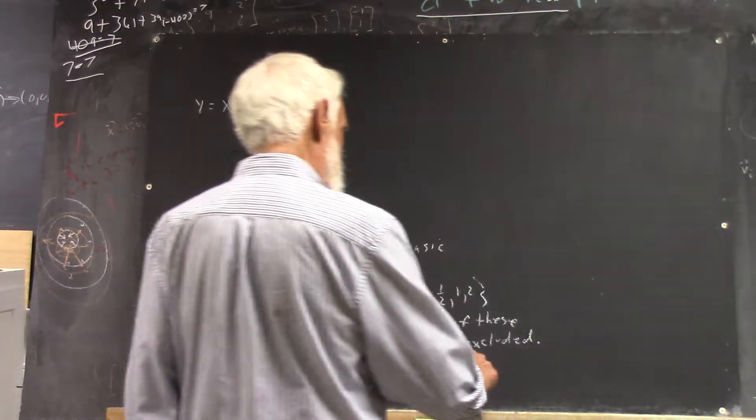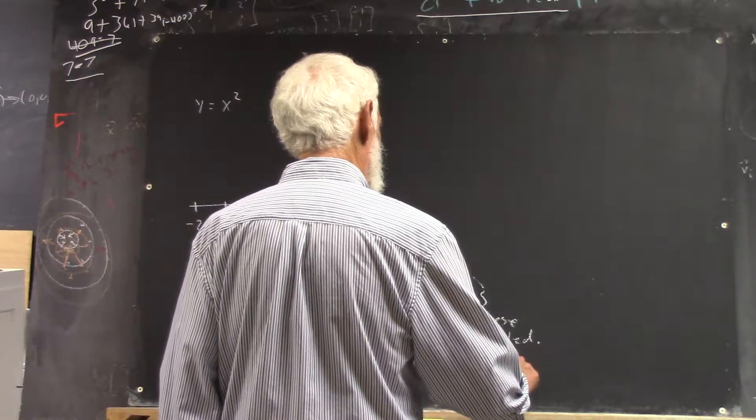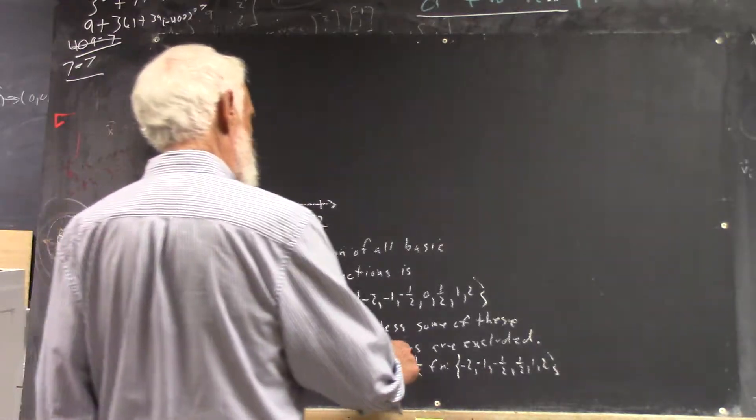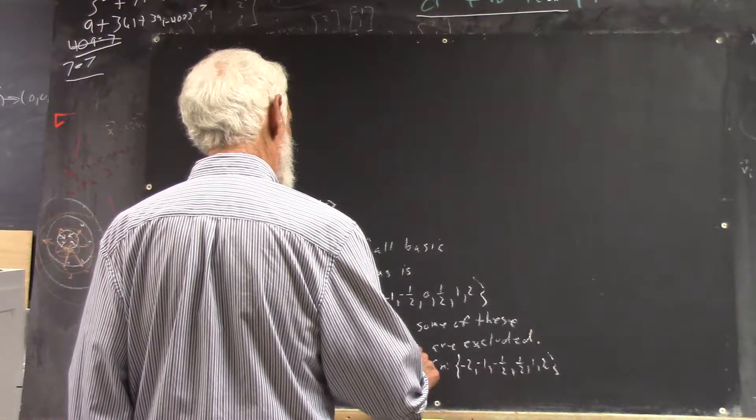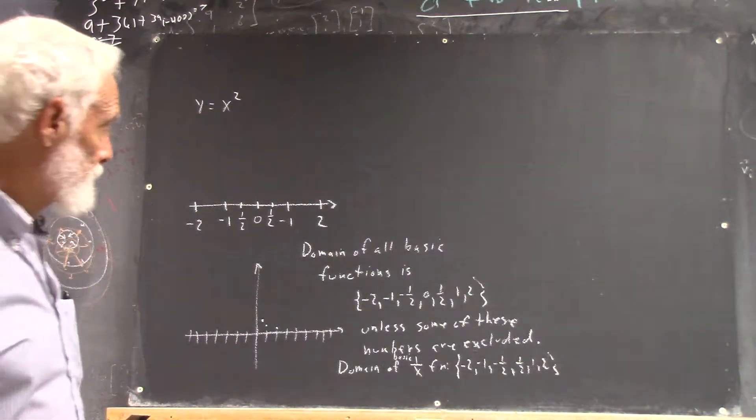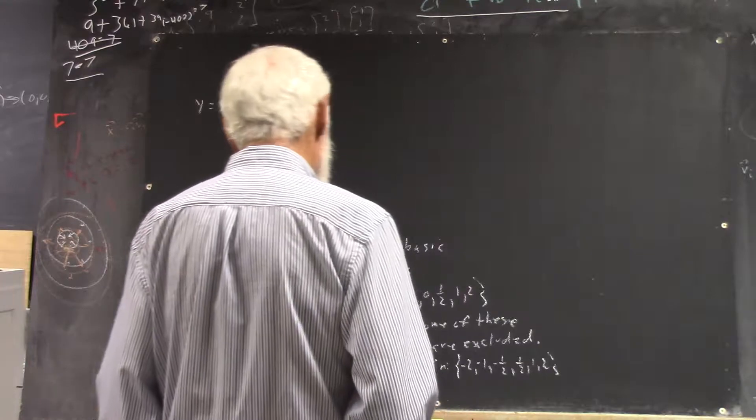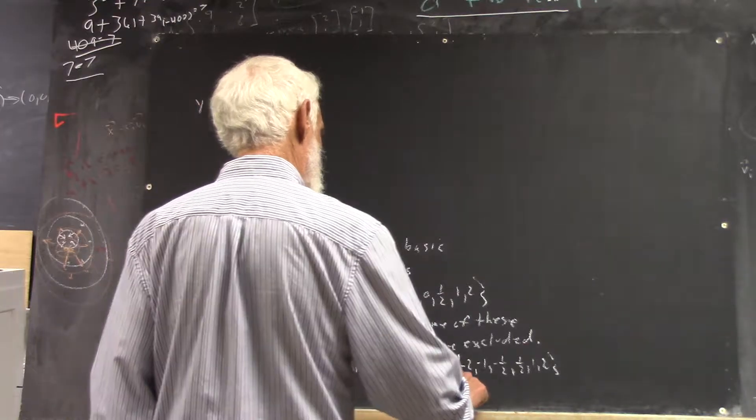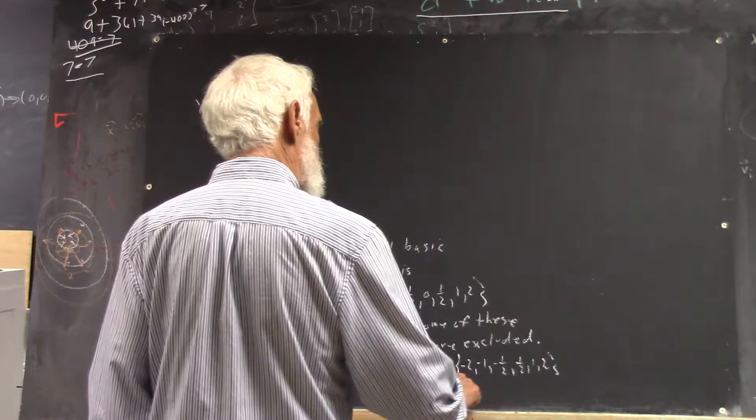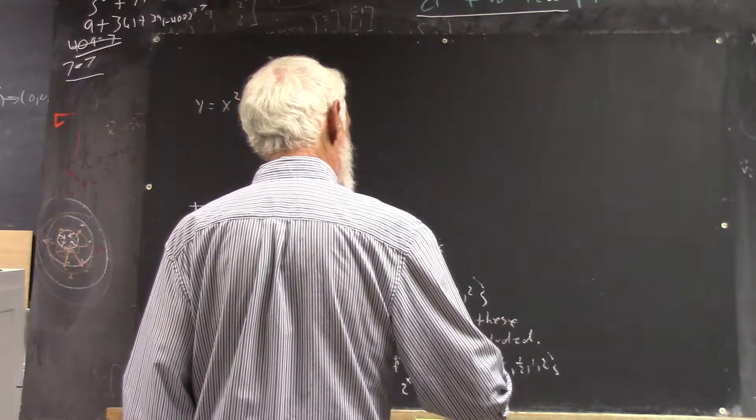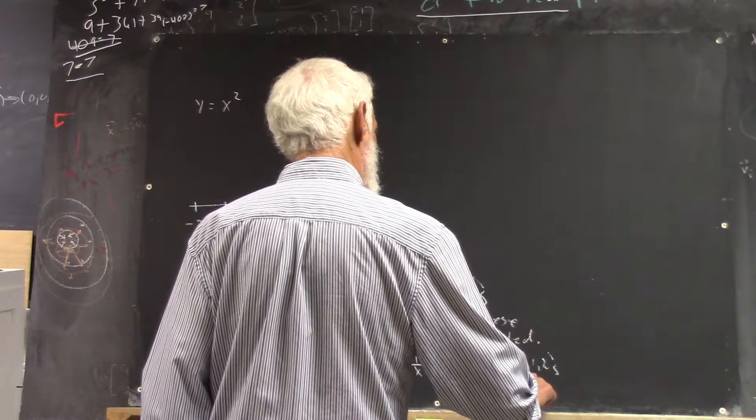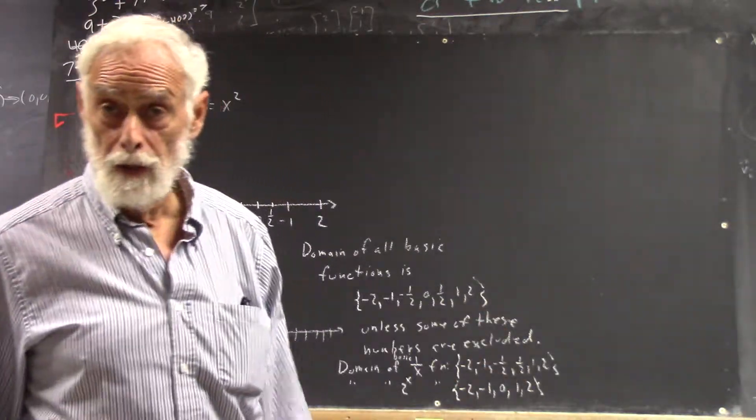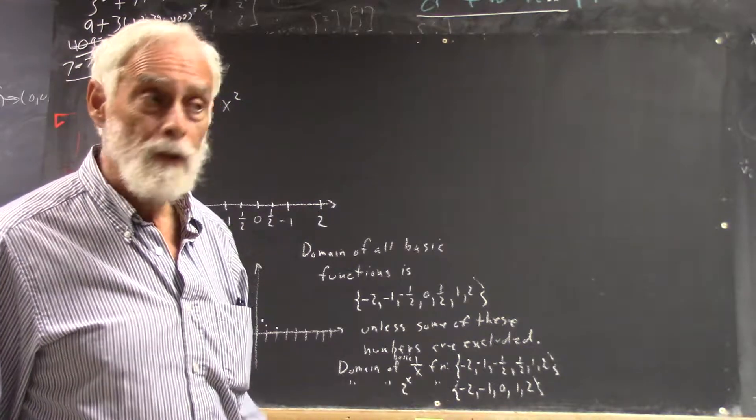So the domain for that function would be negative two, negative one, zero, one, two. It gives you a very simple graph. The domains of most of the rest of the functions, or at least the x squared and x cubed functions certainly, include all of these points. The domain of the one over x function would consist of negative two, negative one, negative one half, one half, one and two. And this is the basic two to the x function. It would just be this because you don't know what the values are at negative one half and one half.